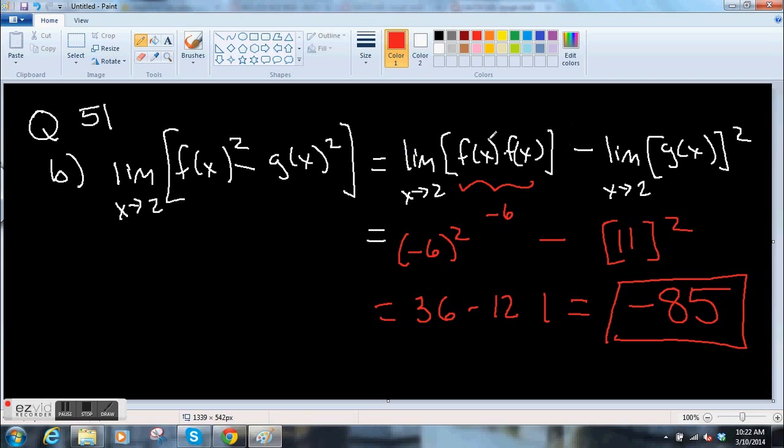So to some extent, you're distributing the limit. You're saying the limit of this whole thing is like the limit of this part minus the limit of this other part. Like that. There you go. And part C, I'll do on another page.